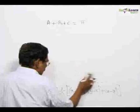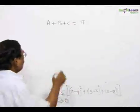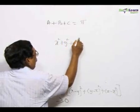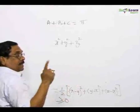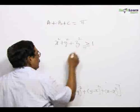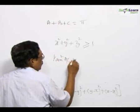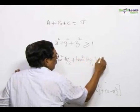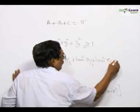Therefore, I will have x squared plus y squared plus z squared minus xy minus yz minus zx, that is equal to minus 1, is greater than or equal to 0. Or, I will have tan squared A by 2 plus tan squared B by 2 plus tan squared C by 2 is greater than or equal to 1.